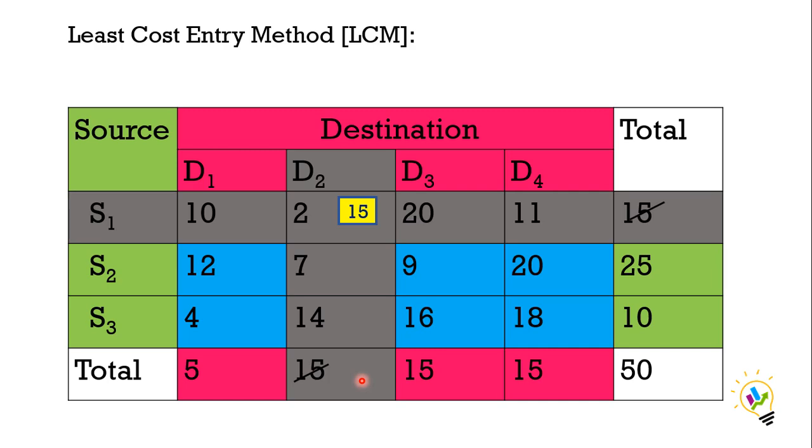Now the remaining cells, you can see the blue color cost cells which are available. Among these values, which is the least? 4 will be the least. Now I am going to allocate material for this, and this is between source S3 to destination D1. How many units can be allocated?